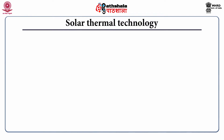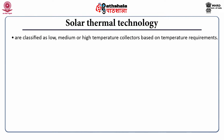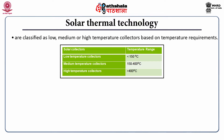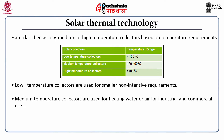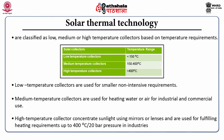Solar collectors are classified as low, medium, or high temperature collectors based on temperature requirements. The low temperature collector has a temperature less than 150°C. Medium temperature collectors have a range of 150 to 400°C. High temperature collectors have more than 400°C. Low temperature collectors are used for smaller non-intensive requirements, medium temperature for heating water or air for industrial and commercial use, and high temperature collectors concentrate sunlight using mirrors or lenses for industrial heating requirements.